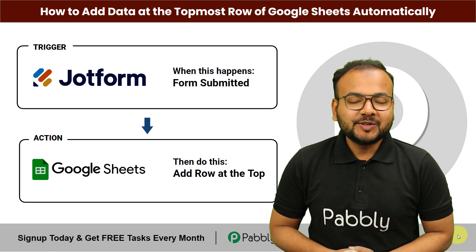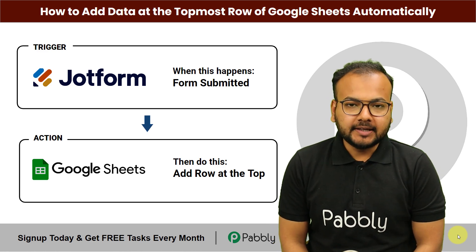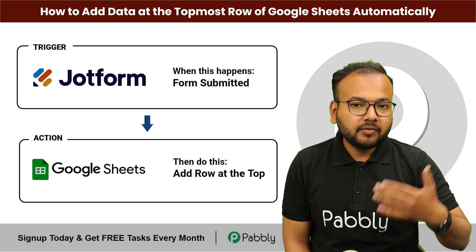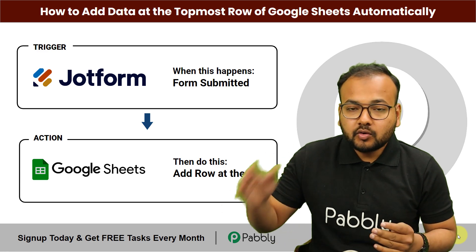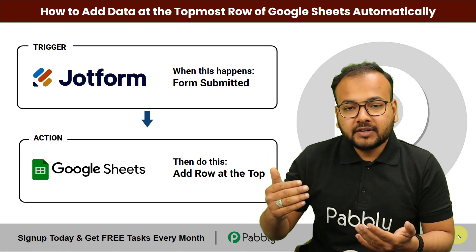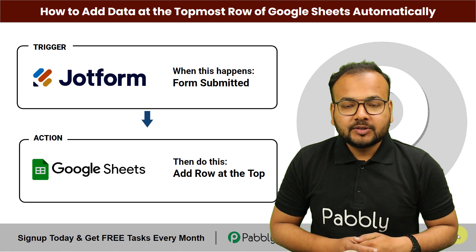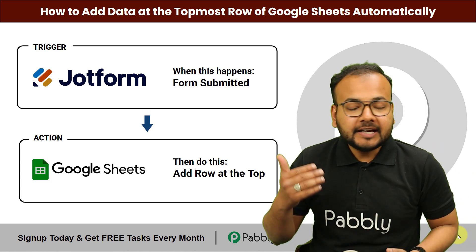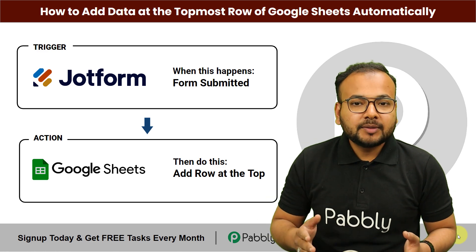Hey everyone, welcome again. In this video you will learn how you can add data at the top most row of your Google Sheets automatically. This data can be coming from any place like a form. If you are collecting contacts or leads from a form, you can use this automation to get the data transferred from the form into your Google Sheets automatically. To learn this automation, stay tuned with me till the end of this video.